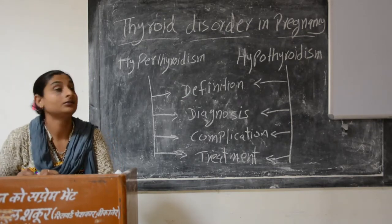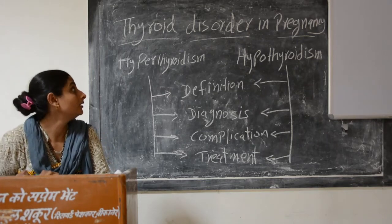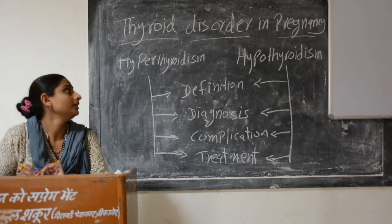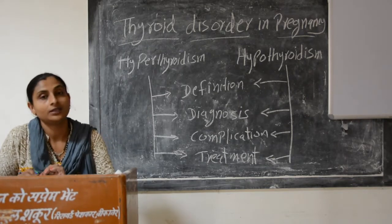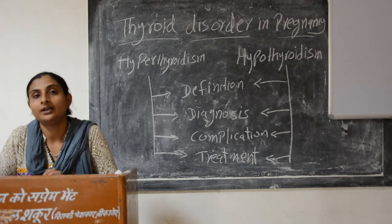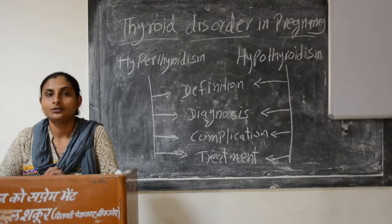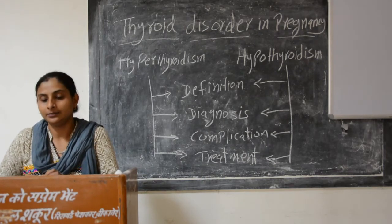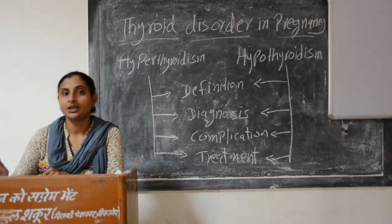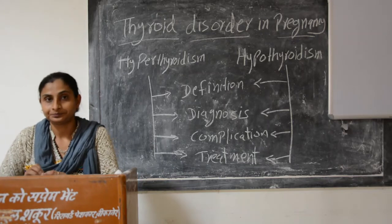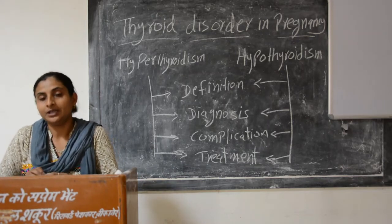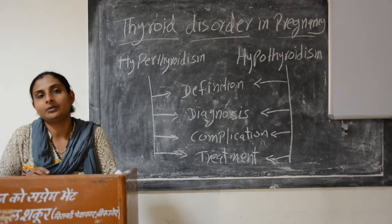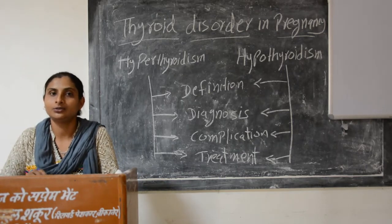We will find two diseases: hyperthyroidism and hypothyroidism. First, let's talk about hyperthyroidism. Hyperthyroidism is a condition where thyroid hormone levels are increased.